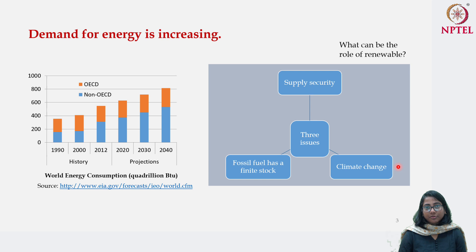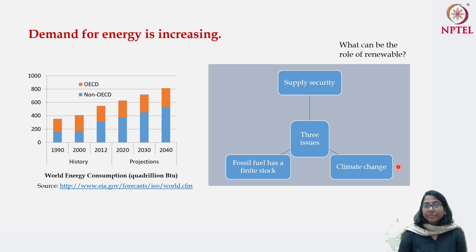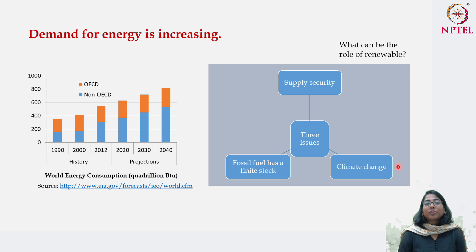Therefore, renewables by replacing fossil fuel can contribute in three different ways. However, it does not mean there are no challenges associated with shifting to renewables — there are many challenges associated with the technology, governance structure, policy, and acceptance of renewable energy. There are also practical implications, for example availability of space. Many renewable energy sources, especially solar or biofuel, need a lot of space in order to harness that energy. So there are real-life challenges as well, and we will try to explore all these advantages and challenges as we go on.